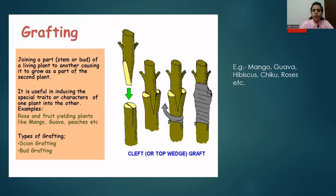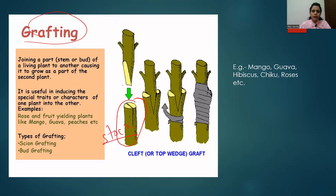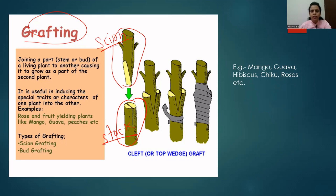The third method of artificial vegetative propagation is grafting. In grafting there are two parts: one is known as the stock, and the other is known as the scion. The stock and scion are from two different plants. For grafting you require a stock and a scion, both from two different plants.